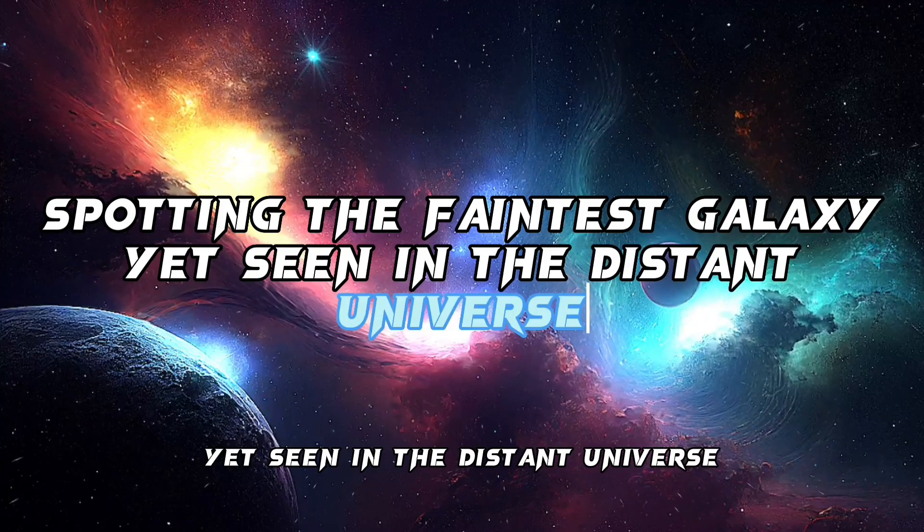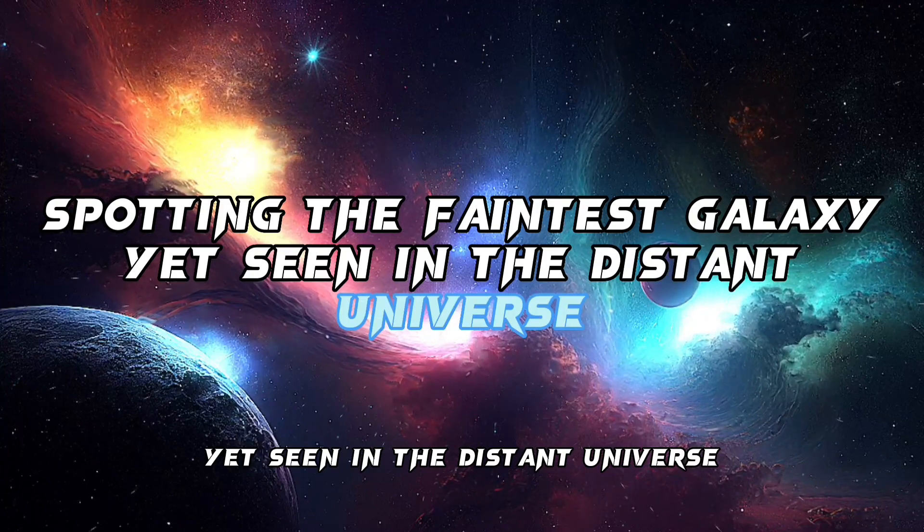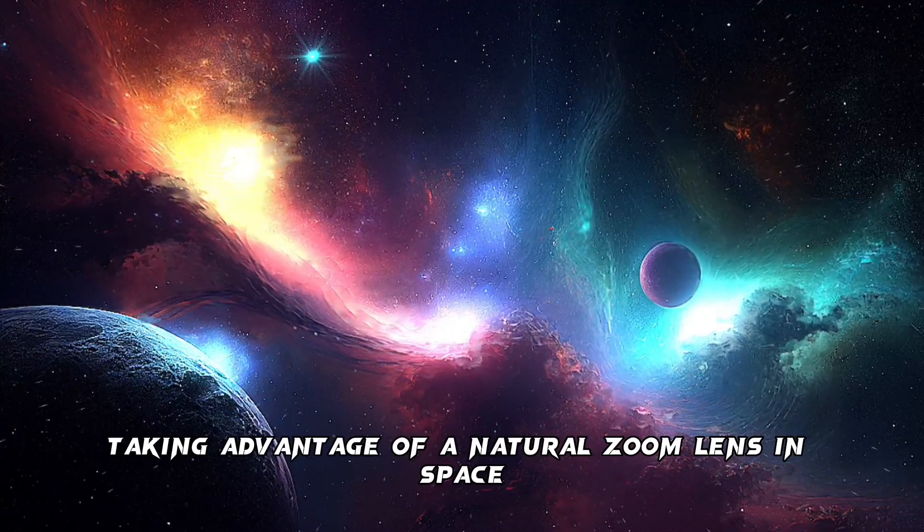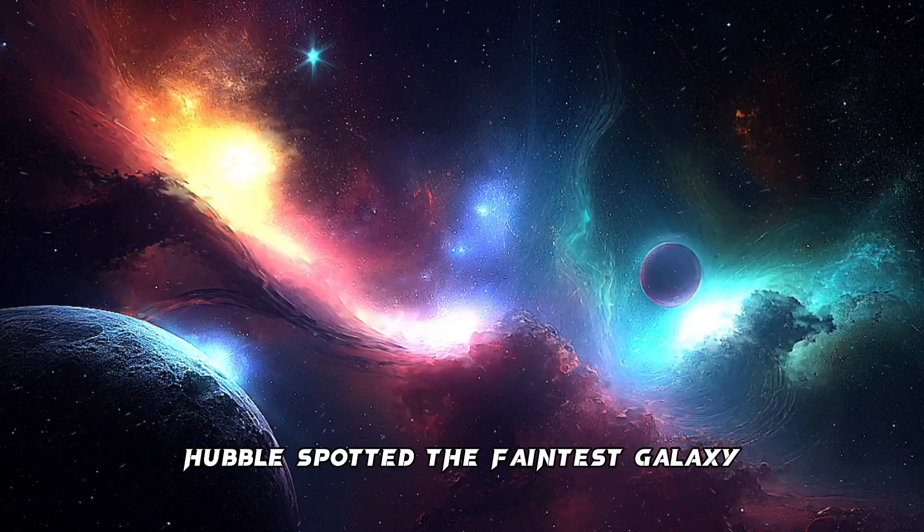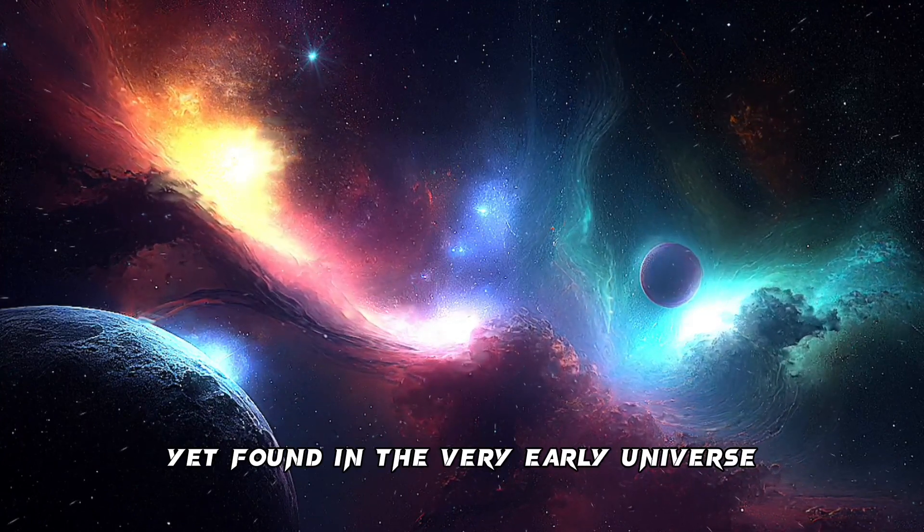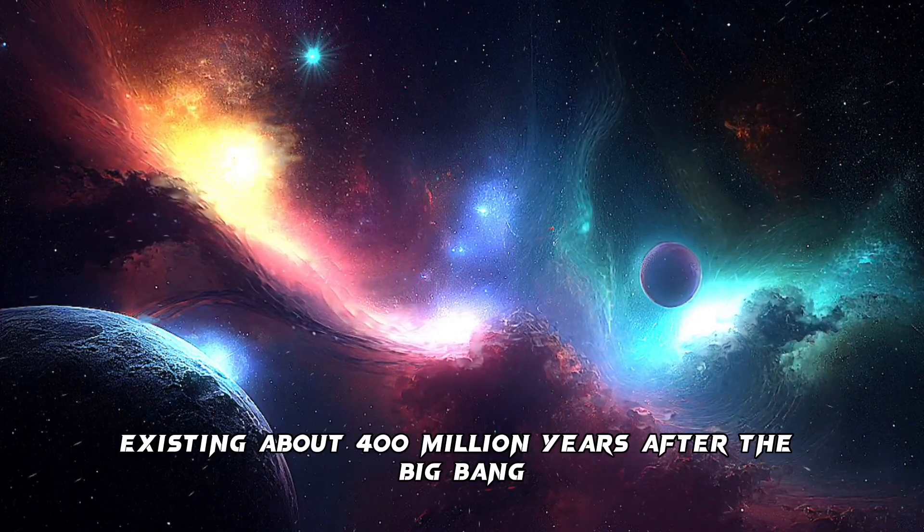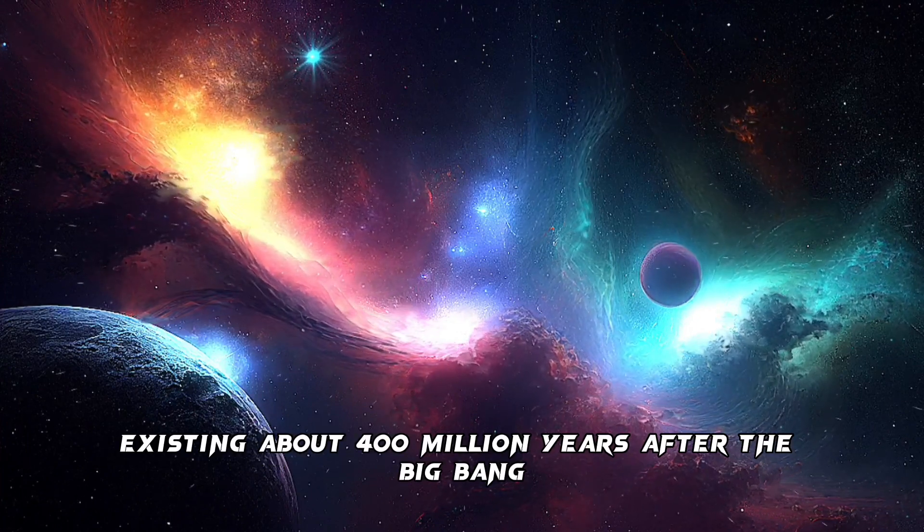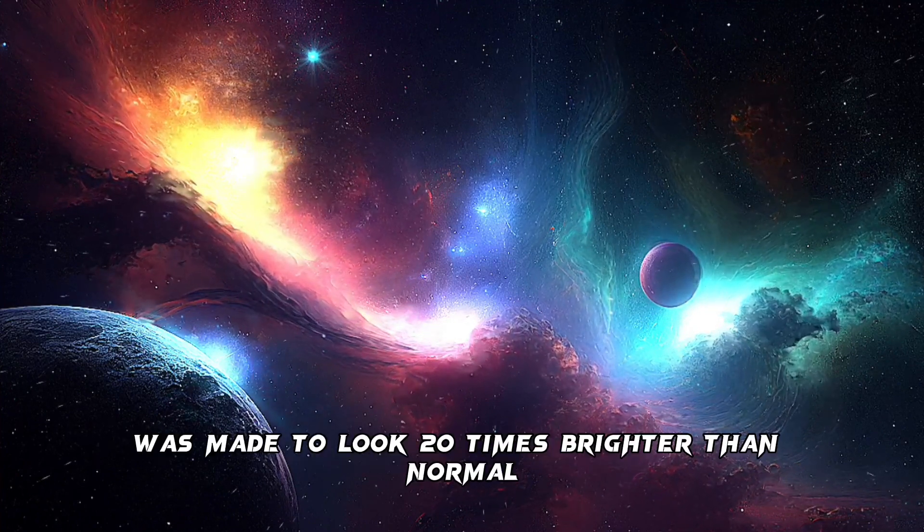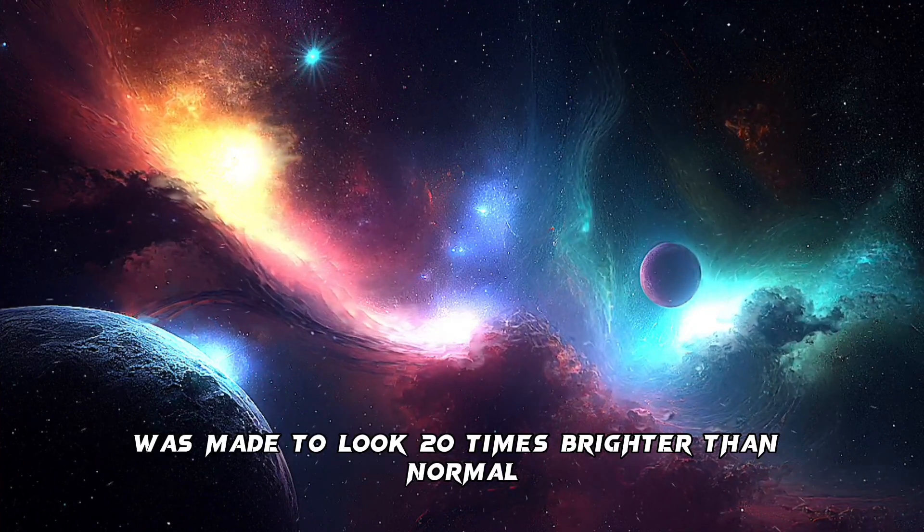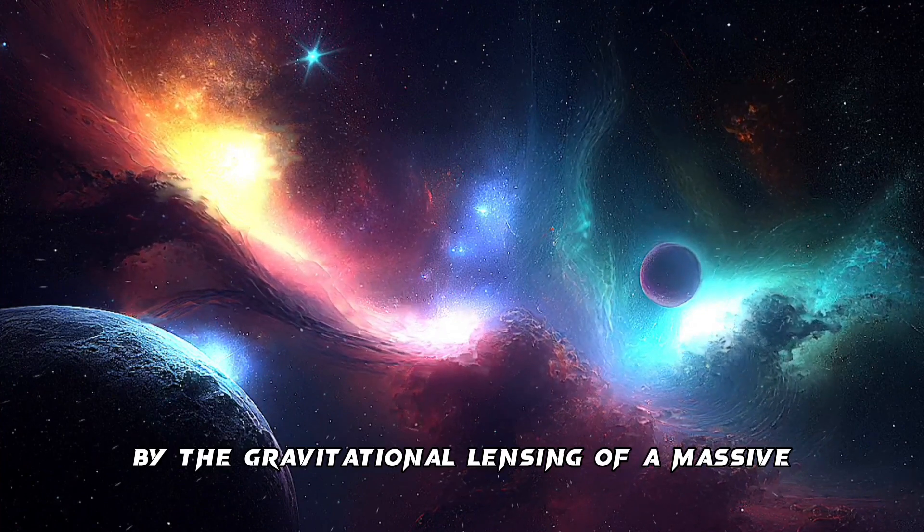Spotting the faintest galaxy yet seen in the distant universe. Taking advantage of a natural zoom lens in space, Hubble spotted the faintest galaxy yet found in the very early universe. Existing about 400 million years after the Big Bang, the dim remote galaxy was made to look 20 times brighter than normal by the gravitational lensing.